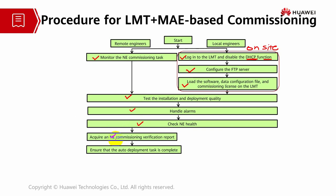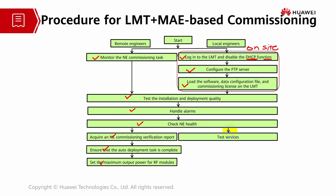The engineer needs to ensure the auto deployment task is completed and also apply maximum output power settings for the RF modules so that services are not impacted. Once commissioning is complete and the remote engineer has finished all verification — including the RF module settings and auto deployment — the local engineer performs the service test, checking all services related to the commissioning. Once they confirm services are normal with no interruption, they confirm with the remote engineer, who then sets the NE mode back to normal, which is related to the maintenance mode.